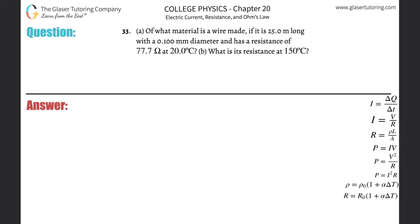Number 33, letter A. Of what material is a wire made if it is 25 meters long with a 0.1 millimeter diameter and has a resistance of 77 ohms at 20 degrees Celsius?